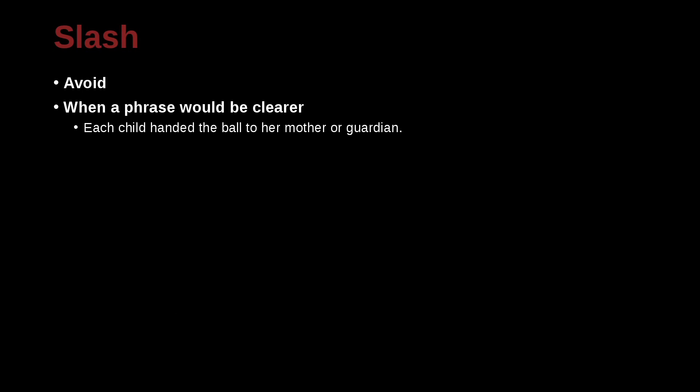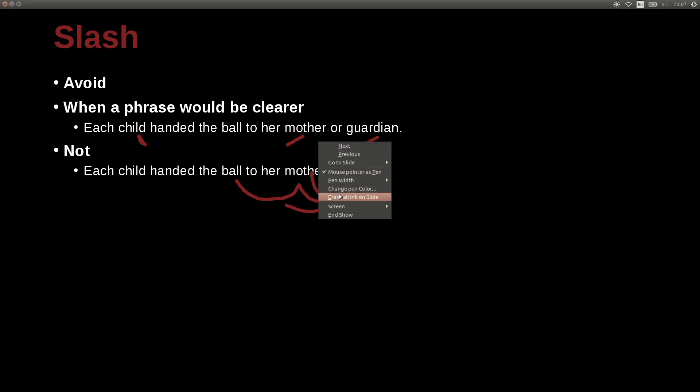Don't use a slash when a phrase would be clear. In other words, don't put words together with a slash when you can make it clear. So here's an example. Each child handed the ball to her mother or guardian. Not each child handed the ball to her mother slash guardian. You see the case here. Mother or guardian. Mother slash guardian. In this case, the child handed the ball. It was probably many children doing this situation. Some handed it to their mother. Some handed it to their guardian. But the individual child handed it just to the mother or just to the guardian. So you cannot say slash because then it would sound like the child took the ball and then gave it to the mother and then gave it to the guardian. Or maybe gave it to the guardian and then gave it to the mother. So you have to be careful not to combine words with slashes in that kind of case.